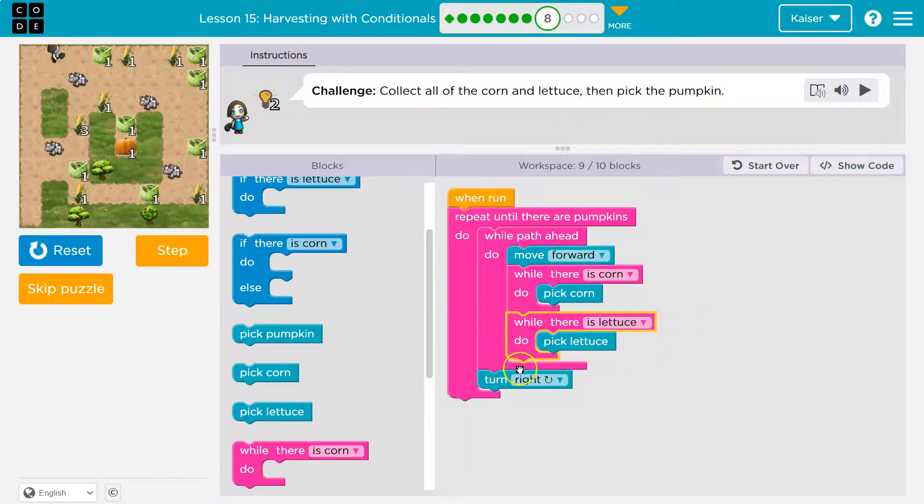So what will happen is I'm going to hit the bottom of this while path ahead, go back to the top of it and say, Hey, is there still path ahead? There is. So I get to move forward. Now, is there any corn? Nope. So I skipped the pick corn. Is there any lettuce? Nope. So I skipped the pick lettuce, check if there's path ahead, move forward. Is there corn? False. So is there lettuce? True. And I'll pick the lettuce. Now, is there any more lettuce? Because I'm going to check again. Nope. No lettuce. So now that while is false. Hit the bottom and I go forward there.